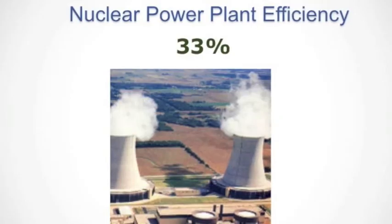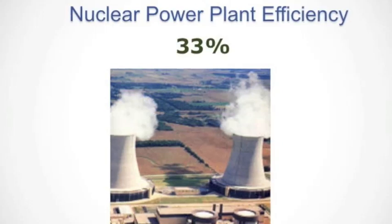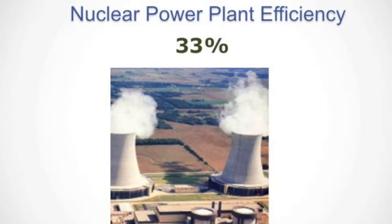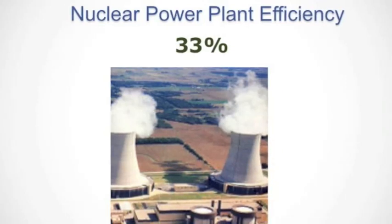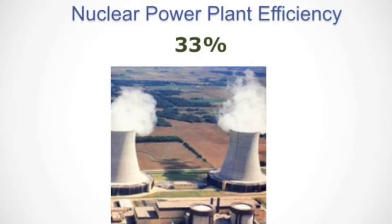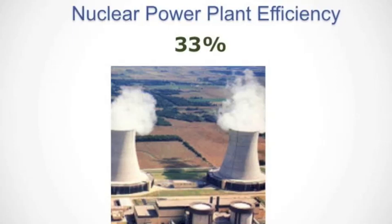A nuclear reactor is very similar to a coal-burning power plant, except that it's using nuclear fuel to make heat instead of burning coal to make heat. It doesn't have the emissions that a coal-burning power plant has. In terms of producing electricity, it's quite simple — it's using a source of heat to make steam, to turn a turbine and to turn an electric generator. The efficiency of a typical nuclear plant is about 33%, very similar to that of a coal plant.